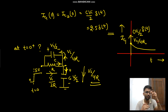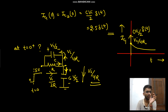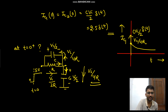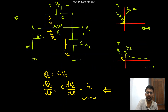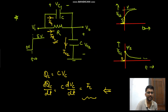VC2 initially had zero volts, suddenly jumped to 2.5 volts, then charged to 5 volts. VC1 initially jumped to 2.5 volts then reduced to zero volts. This completes the intuitive analysis. You can also solve it by Laplace and confirm your answer. In the next video we will see the last circuit.